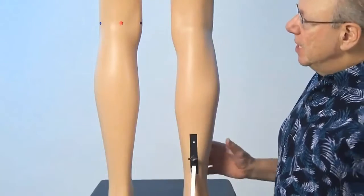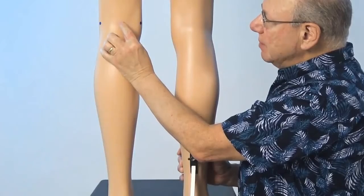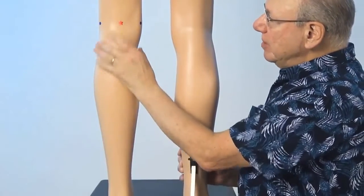To locate bladder 40, find the midpoint of the back of your knee, right about here.